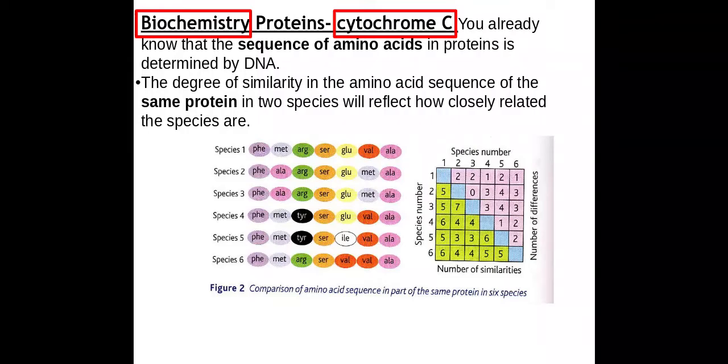But for proteins, we're looking at amino acid sequences. Do not get confused between DNA and proteins. For proteins, I can see the amino acid sequence, see if it's similar or different from other organisms, and that will tell me if they're closely related or not. The more similar the amino acid sequences are, the more closely related the individuals will be.